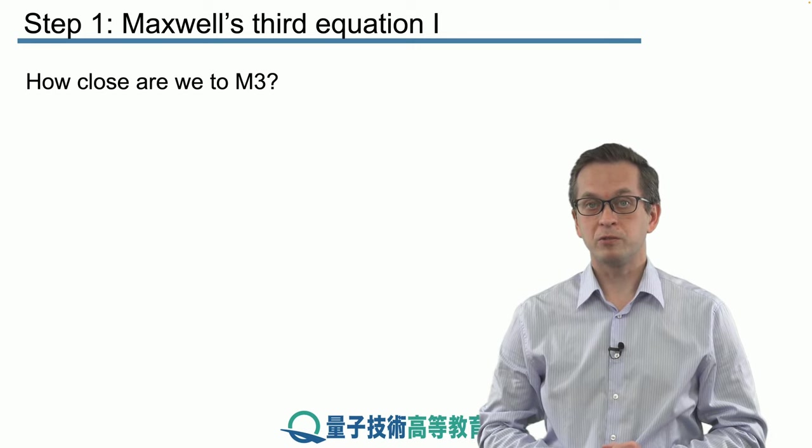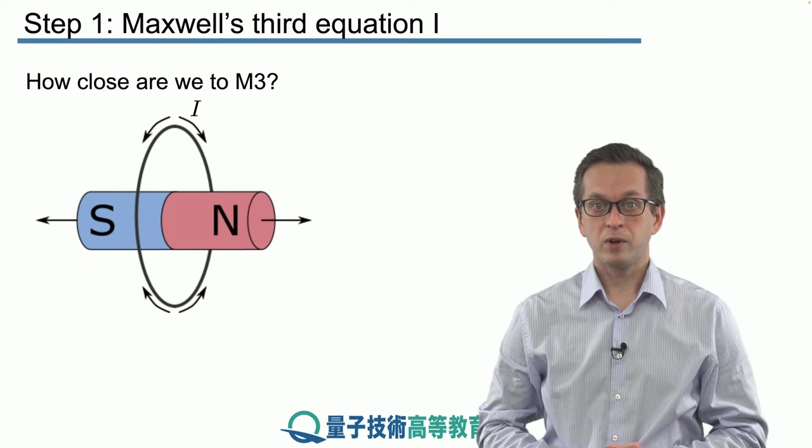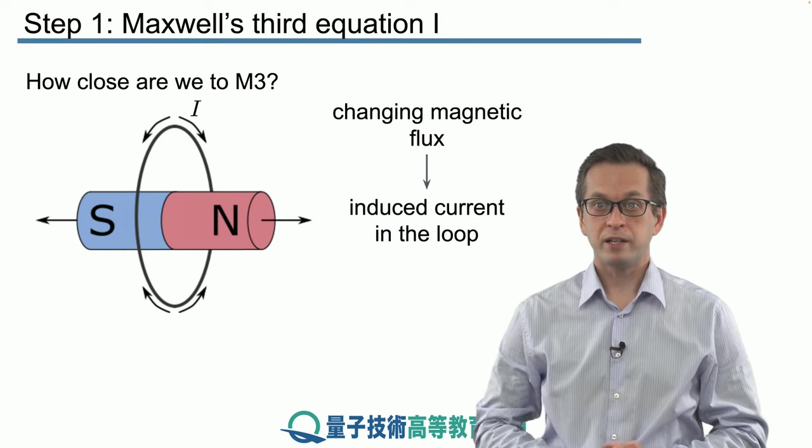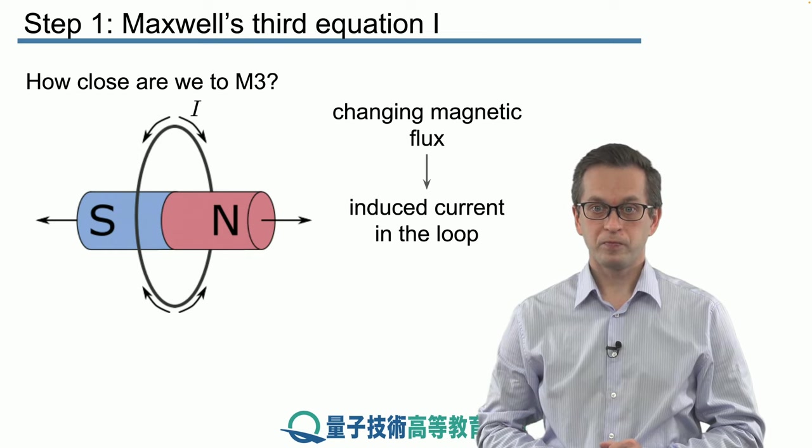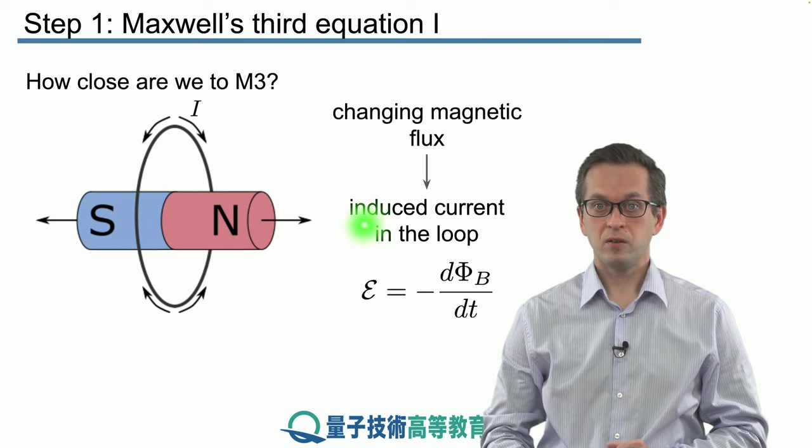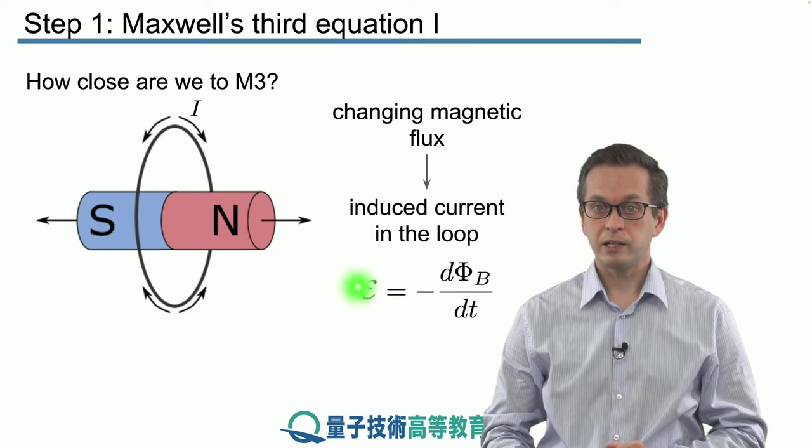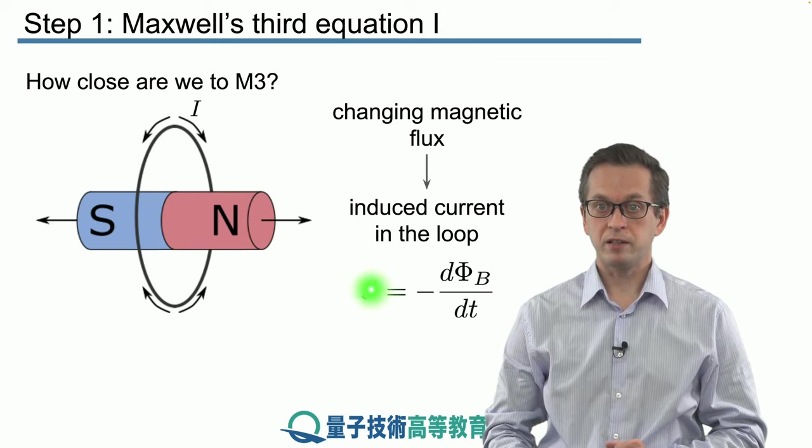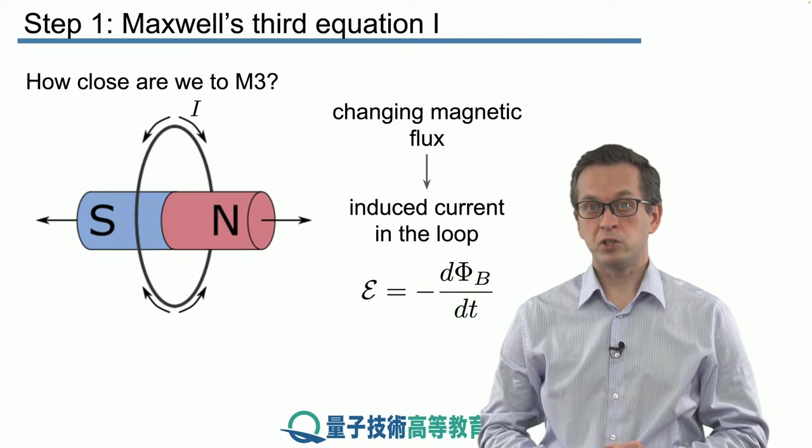So how close are we to Maxwell's equation number three? So far, we have the scenario where we have a changing magnetic flux inducing a current in the loop. And we know that the electromotive force induced by the magnetic field is related to the negative rate of change of the magnetic flux.